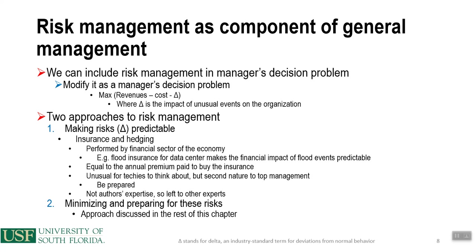There are two approaches to risk management. One is making risks — delta — more predictable, which you can do through insurance and hedging performed by the financial sector. For example, flood insurance for a data center makes the financial impact of a flood more predictable — it equals the annual premium paid. This is unusual for techies to think about, but second nature for top management.